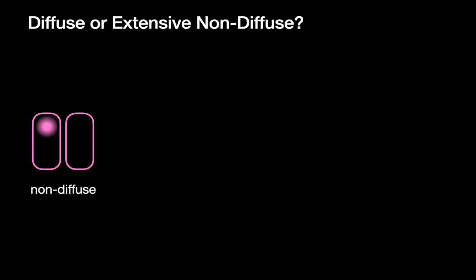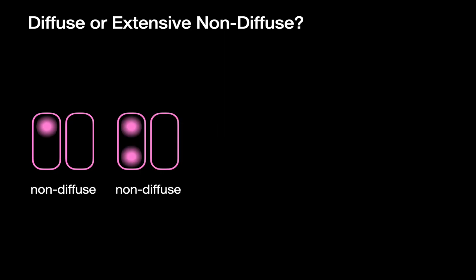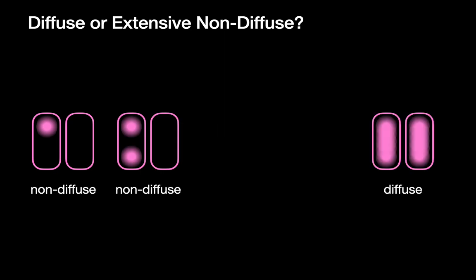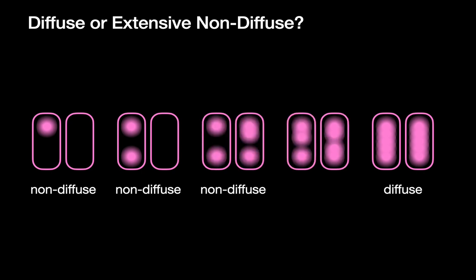This talk focuses on diffuse consolidation in the lung. Non-diffuse patterns refer to one focus, two, or a few. When we talk about diffuse, we're talking about symmetric diffuse events. Obviously, there's going to be a continuum from non-diffuse to diffuse, and there will be a point where we're not quite sure if we're dealing with a diffuse or extensive non-diffuse pattern. Not to worry — we'll address that at the end of this talk.